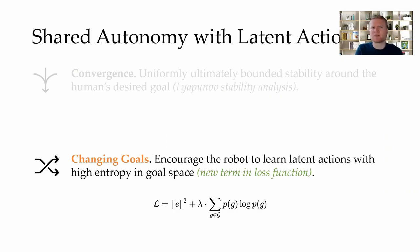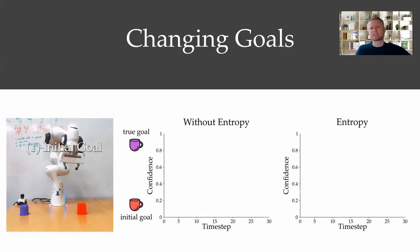But the human might mess up and lead the robot towards one high-level goal before changing their mind. If the robot has already converged towards the first goal, how do we ensure that it's not stuck and unable to change goals? We address this problem by encouraging entropy in the latent action space. Here's an example of our desired behavior. A Boltzmann rational, simulated human is controlling the robot.